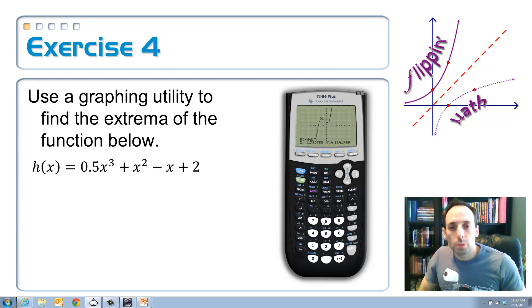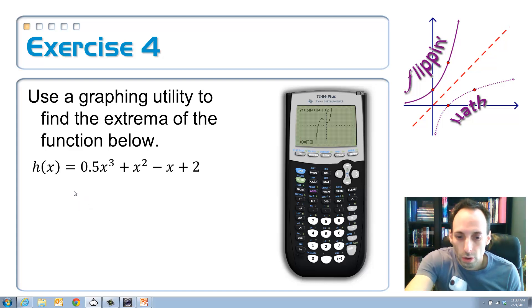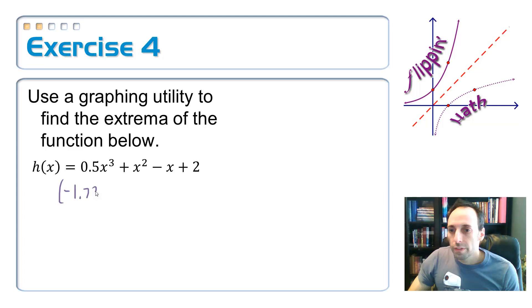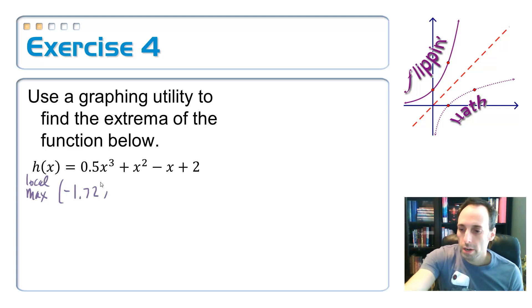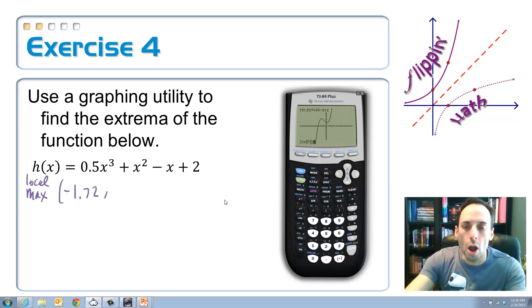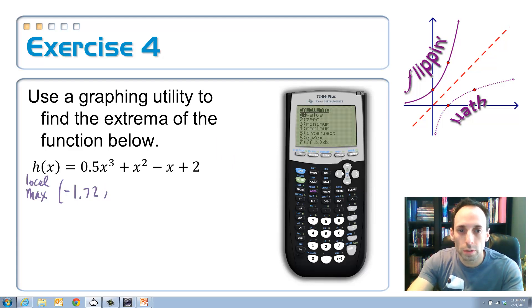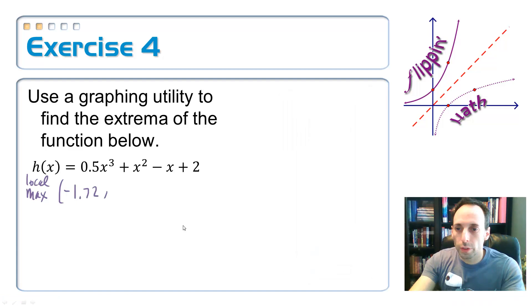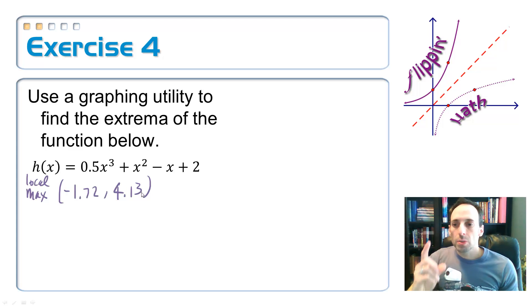And here is a local maximum point. It's at negative 1.72. And the y value is 4.13. Now the actual maximum value is 4.13, right? It's the y value on that.